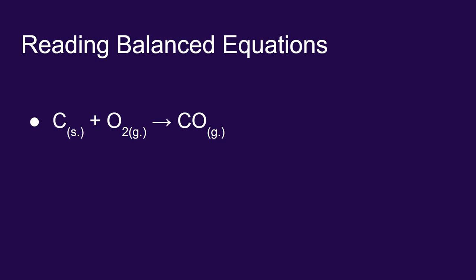Let's start with the formation of carbon monoxide. First things first, it has to be balanced. If you don't have a balanced equation, you can't do any of the work in this unit. So now we have it balanced. Now what does it say?